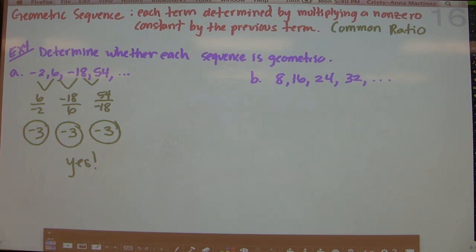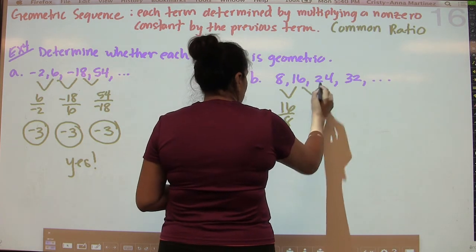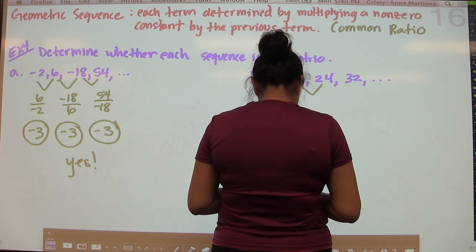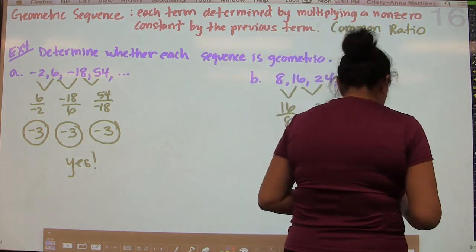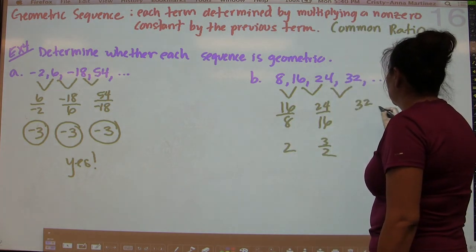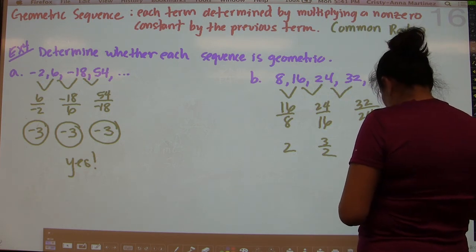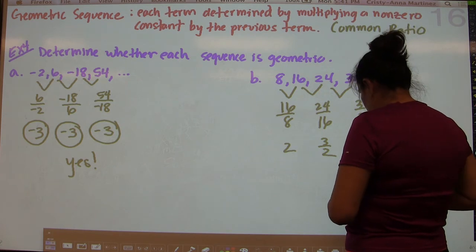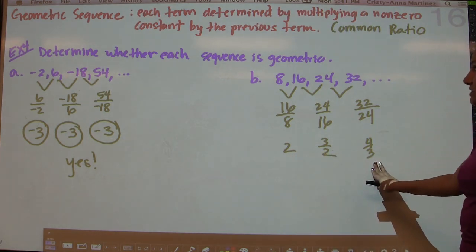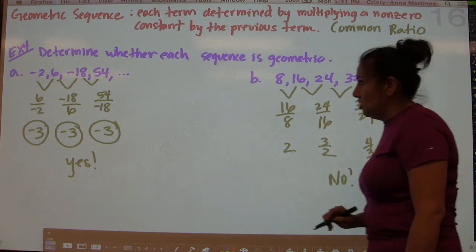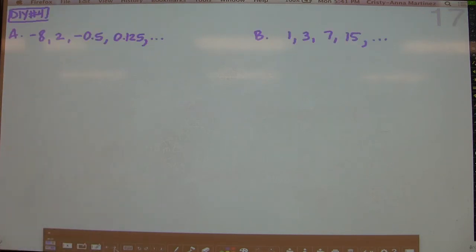For part B, we take 16 divided by 8, which is 2. Then 24 divided by 16 is 3 halves, which is not 2. Then 32 divided by 24 is 4 thirds. Since we don't always get the same value, there is no common ratio, and therefore this is not a geometric sequence.